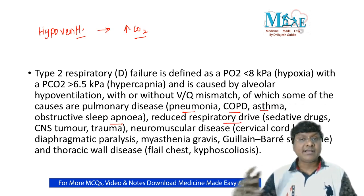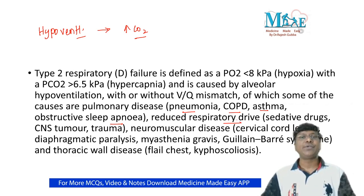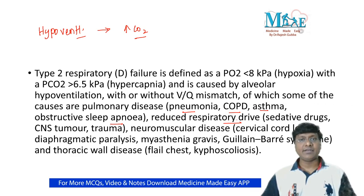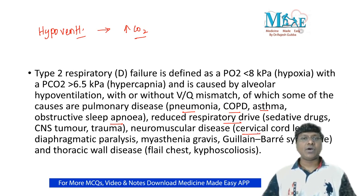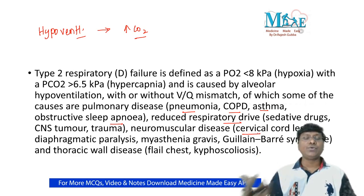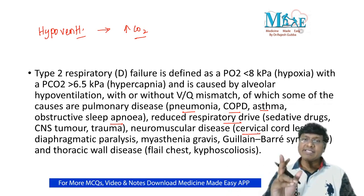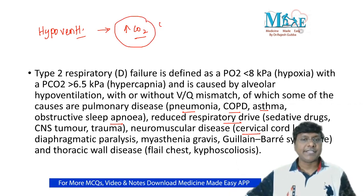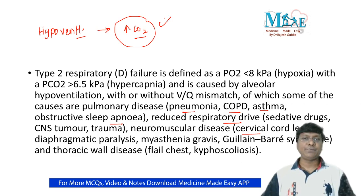Other important causes include drugs that suppress the respiratory system, mainly opioids — which suppress the respiratory center, causing loss of respiratory drive, leading to hypercapnia and type 2 respiratory failure. Cervical cord lesions at C3 to C5 damage the phrenic nerve, which supplies the diaphragm, causing diaphragmatic palsy, hypercapnia, and type 2 respiratory failure.